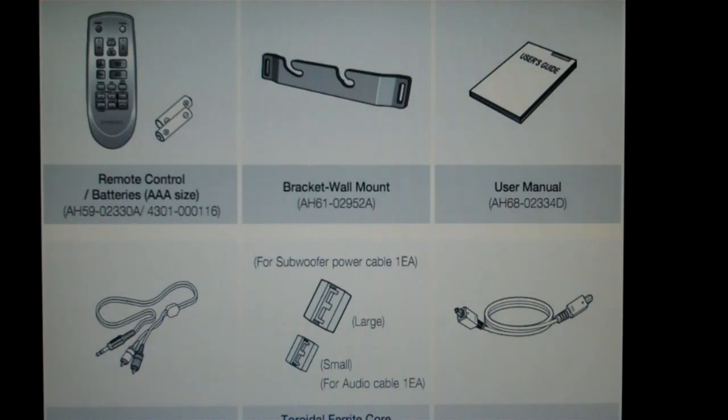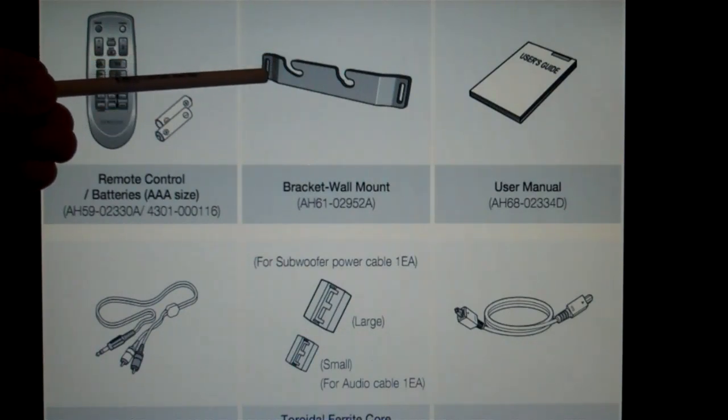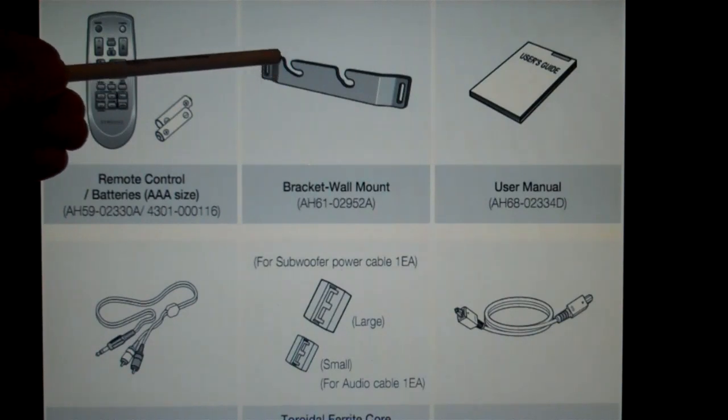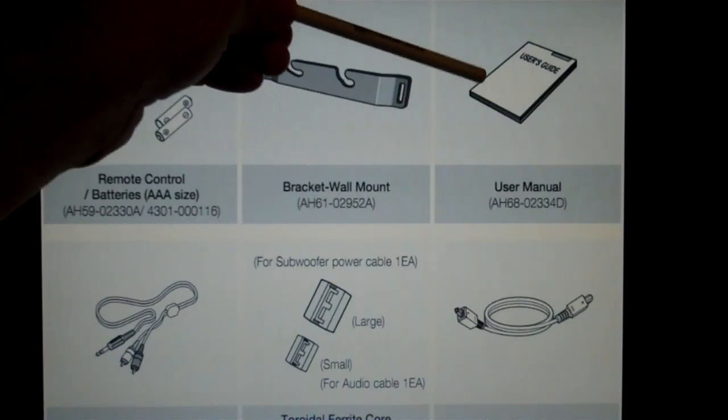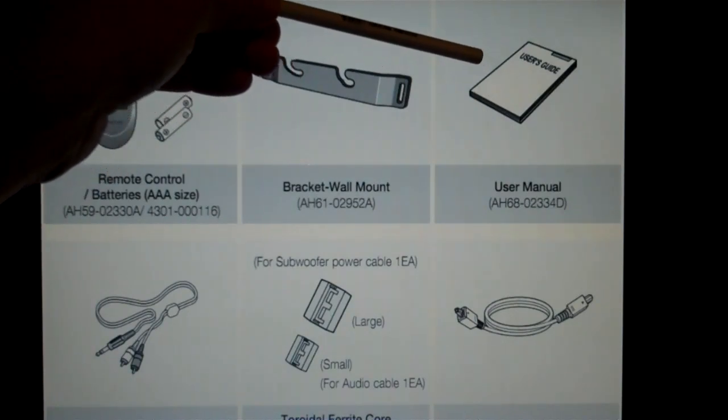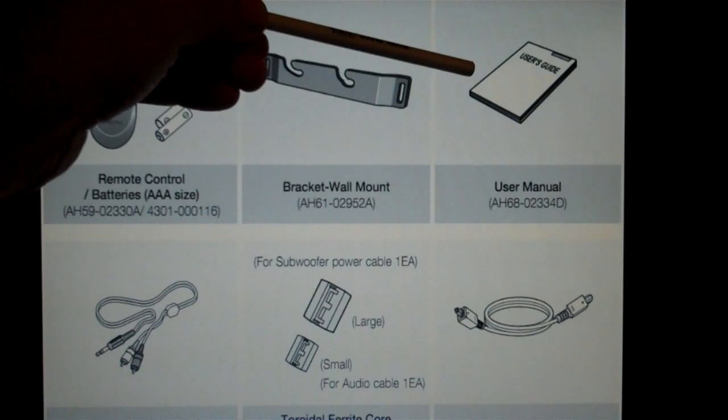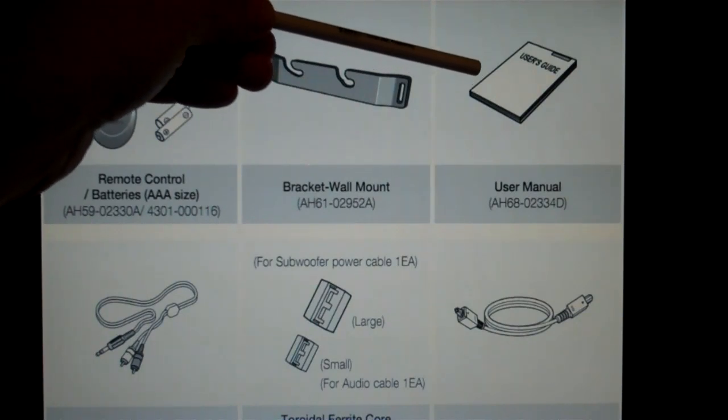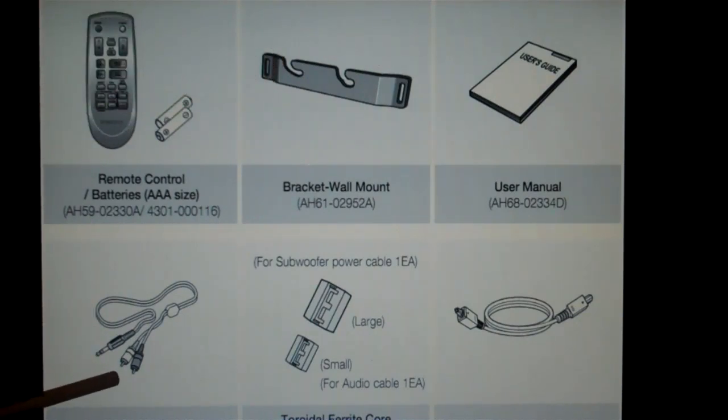This is a depiction of what comes in the package. You get a remote, one pair of AAA batteries, a bracket that you secure to the wall about a few inches below the bottom of your TV and the soundbar hangs on that. You get a user's guide, which is nice because not everybody gives you a user's guide—they try to put it on disk or let you get it online. You get one RCA cable to connect to the back of your TV, and this stereo jack plugs into the soundbar.